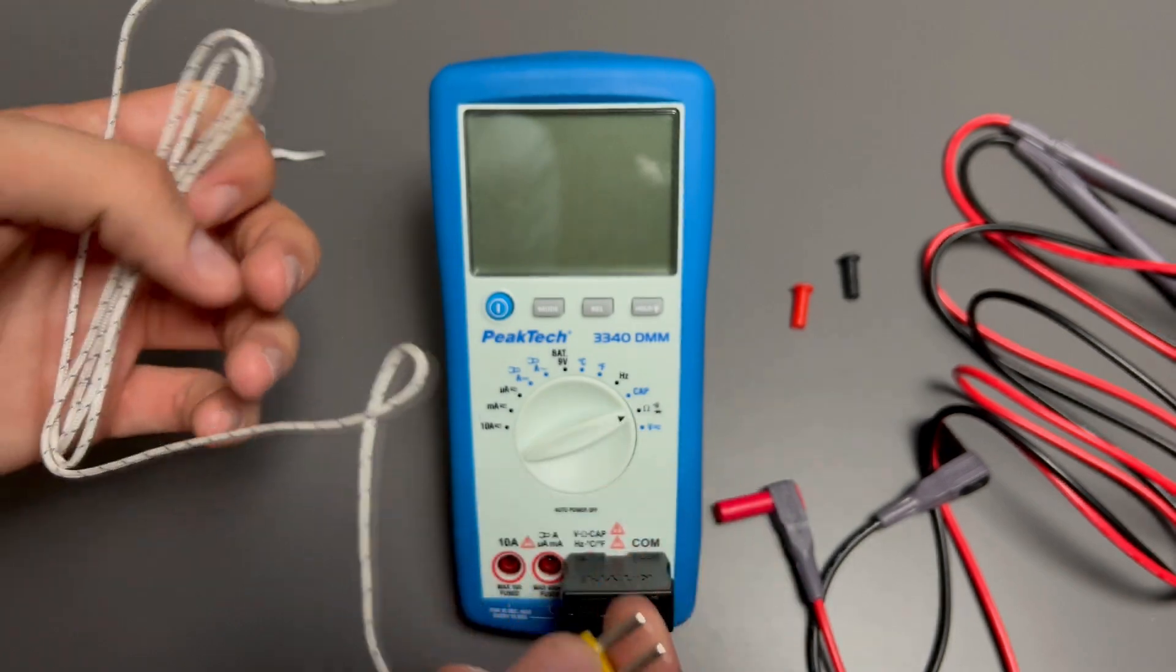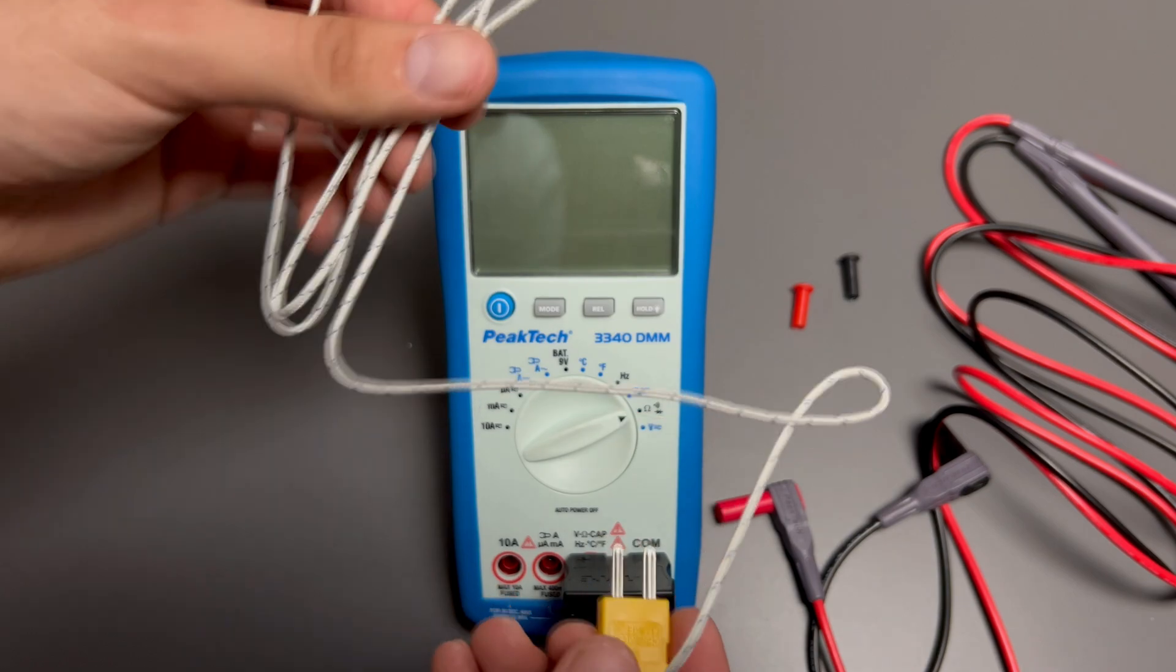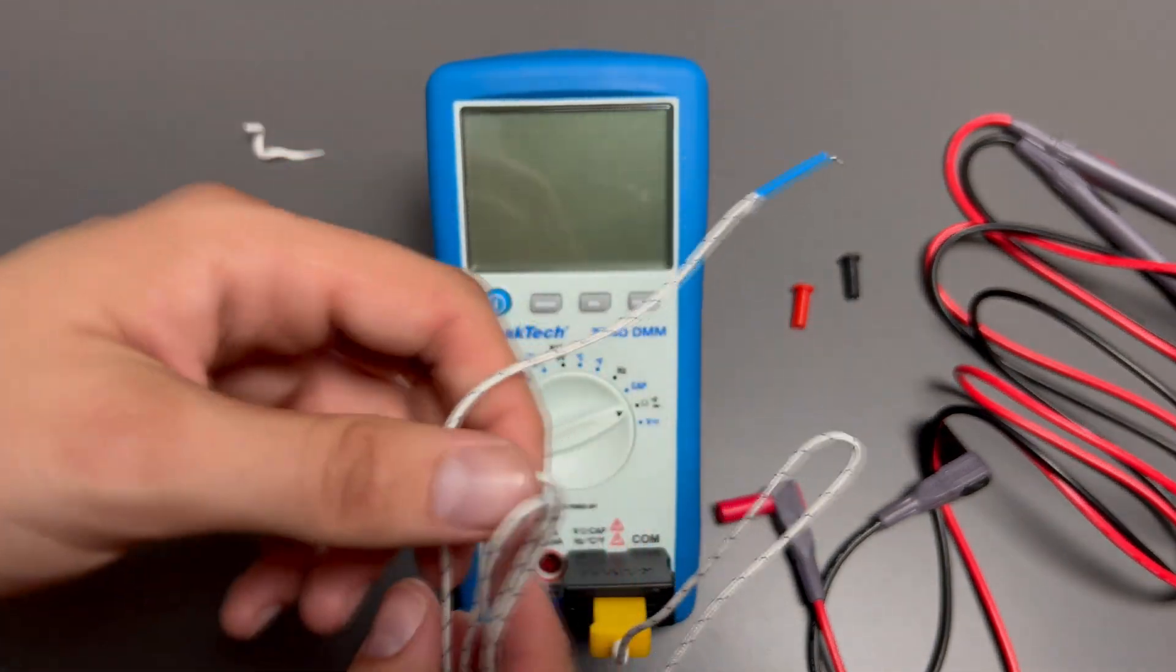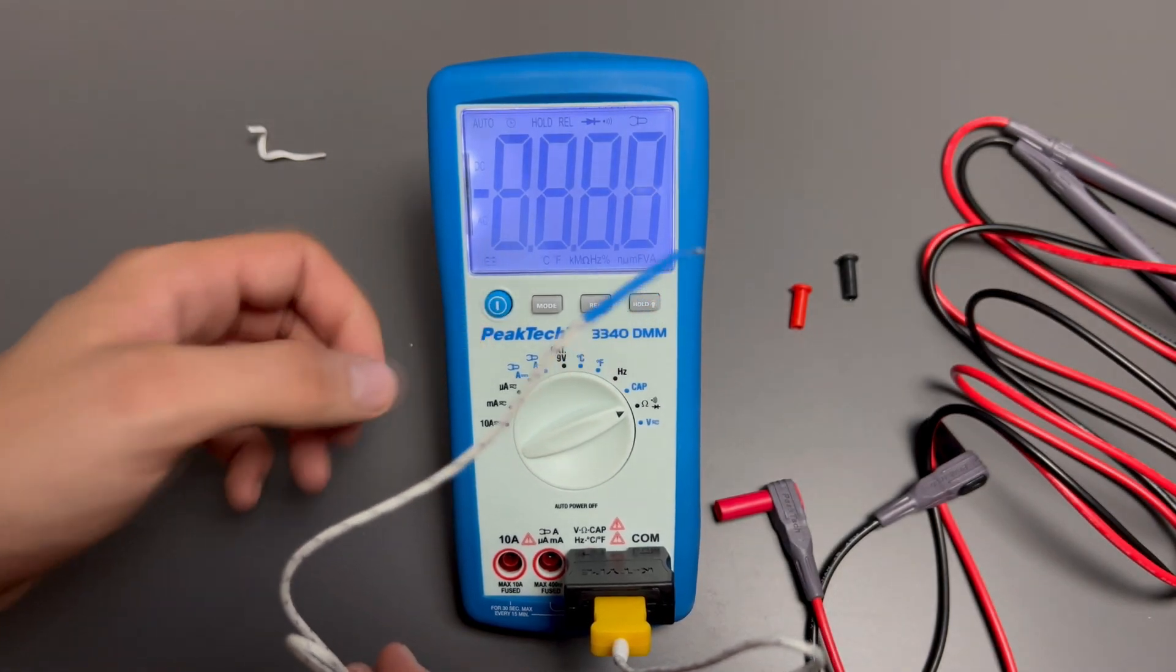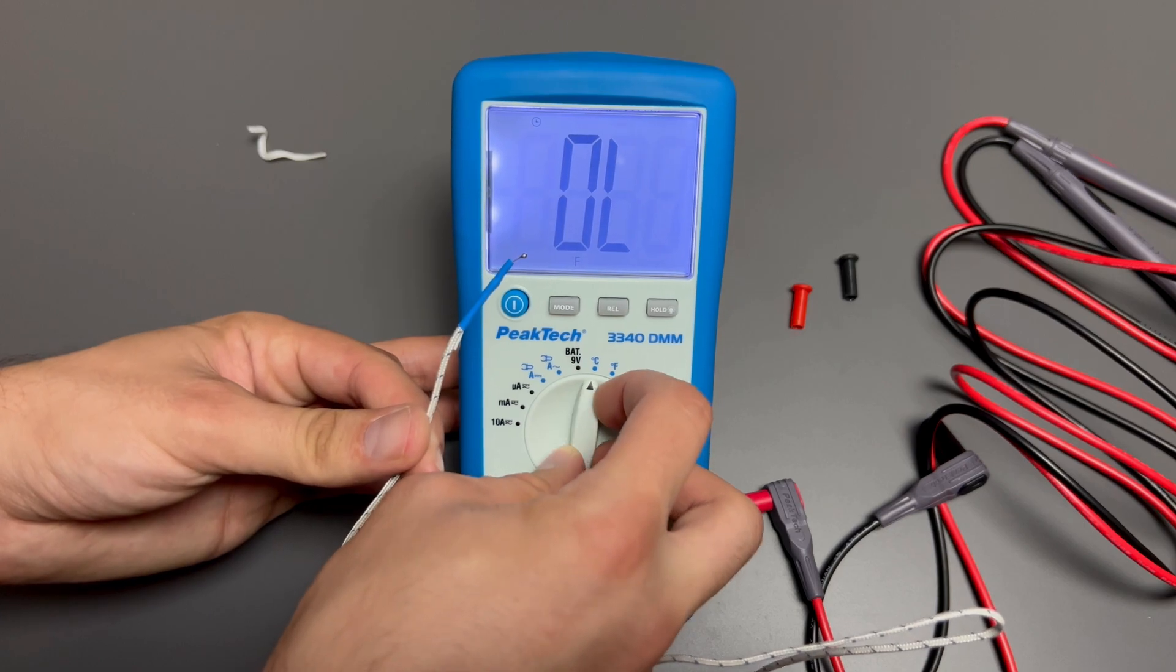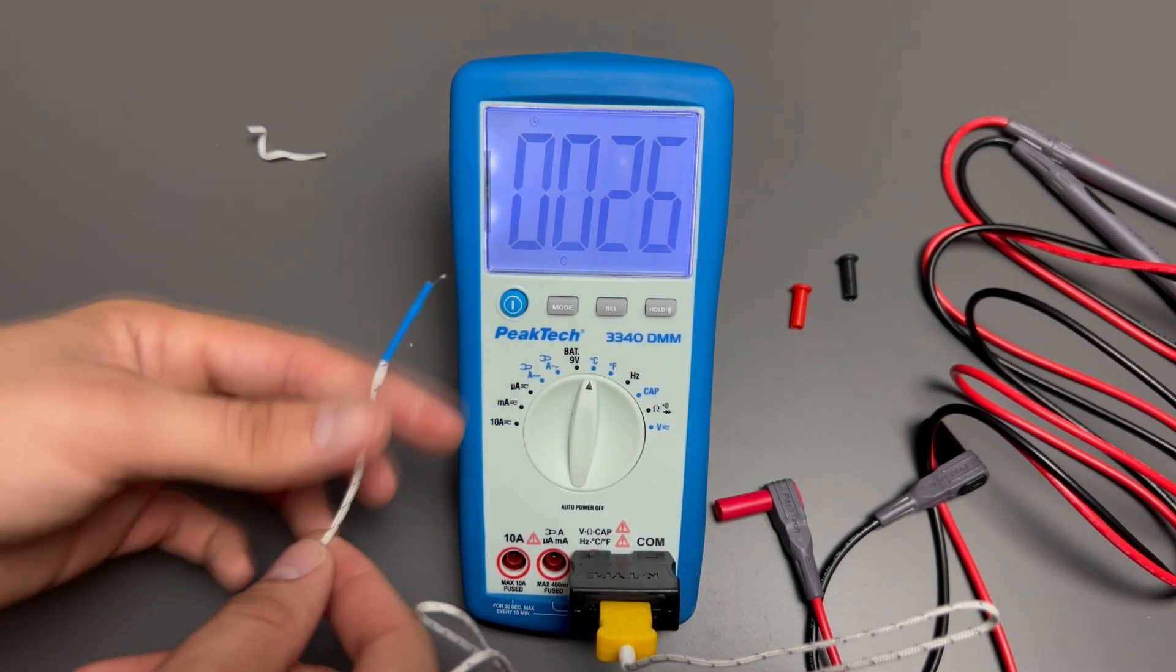Place the thermocouple junction tip at the point where the temperature is to be measured. Select the required temperature range and unit of measurement by turning the rotary selector switch dial to degree Celsius or degree Fahrenheit position.